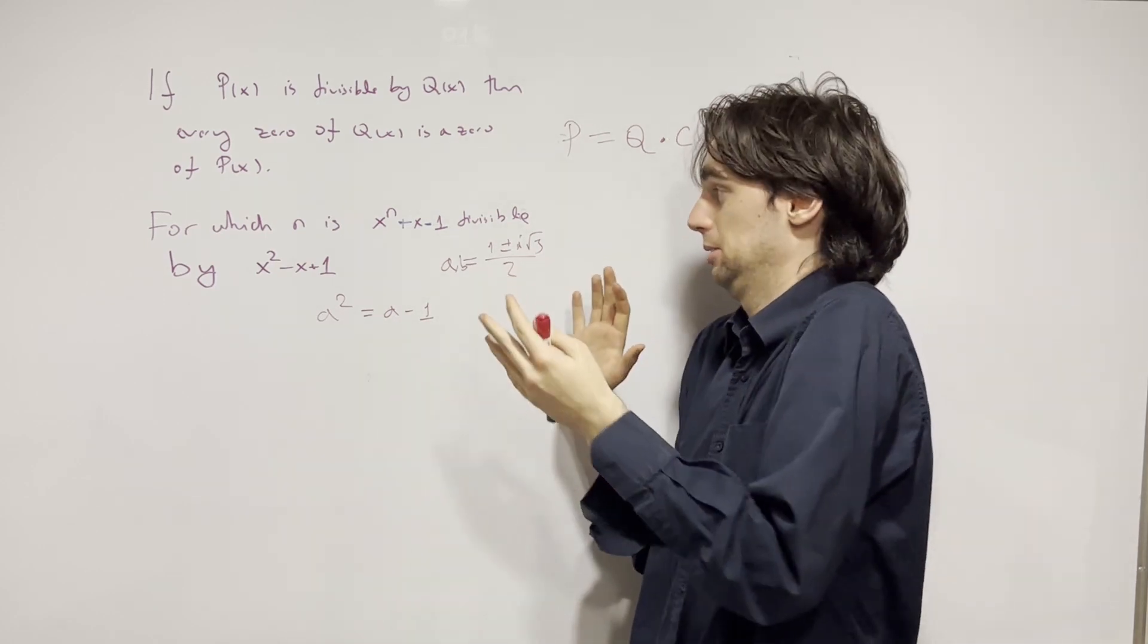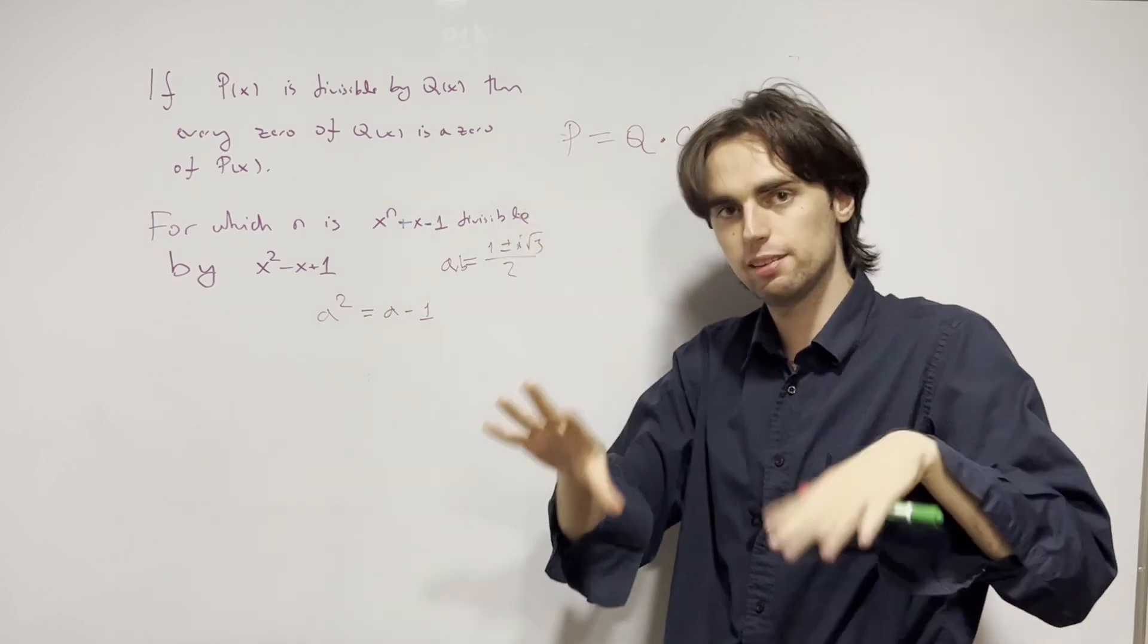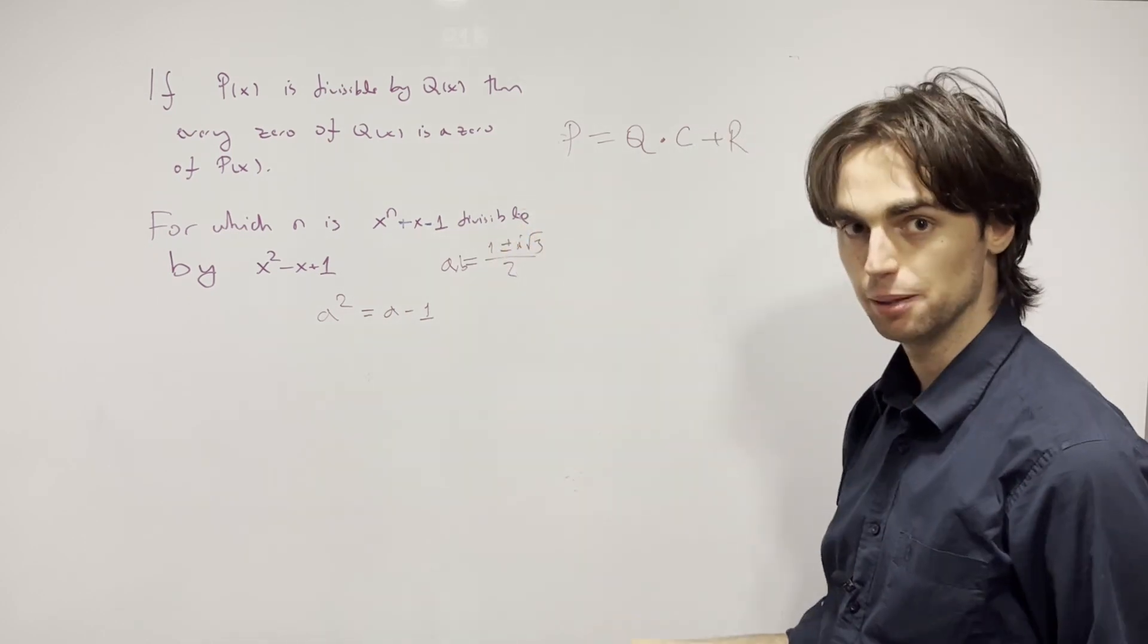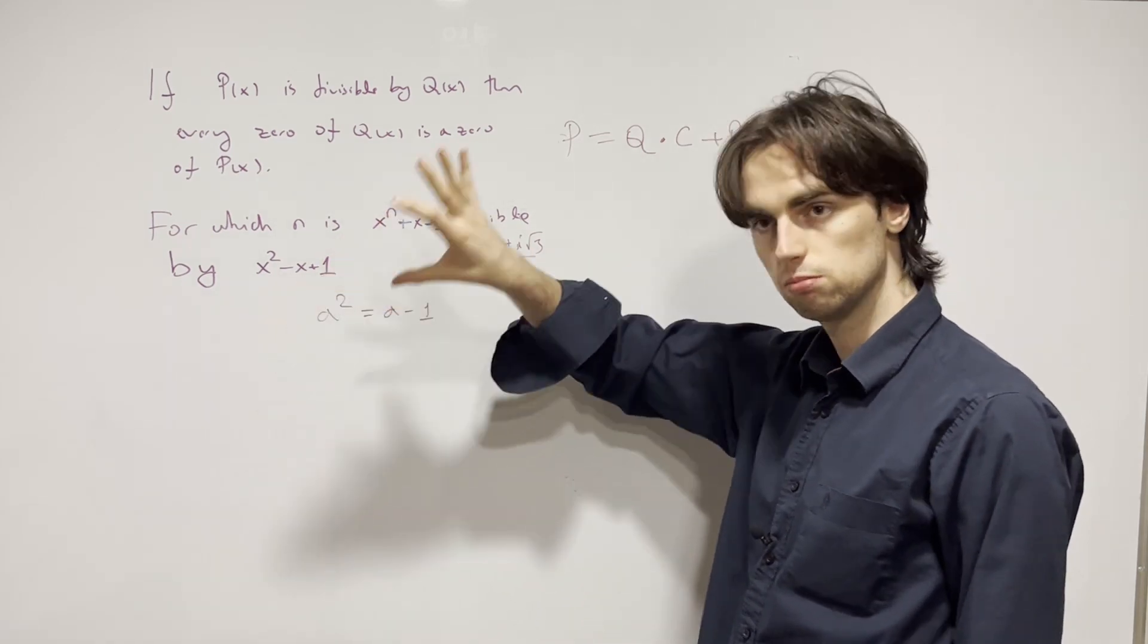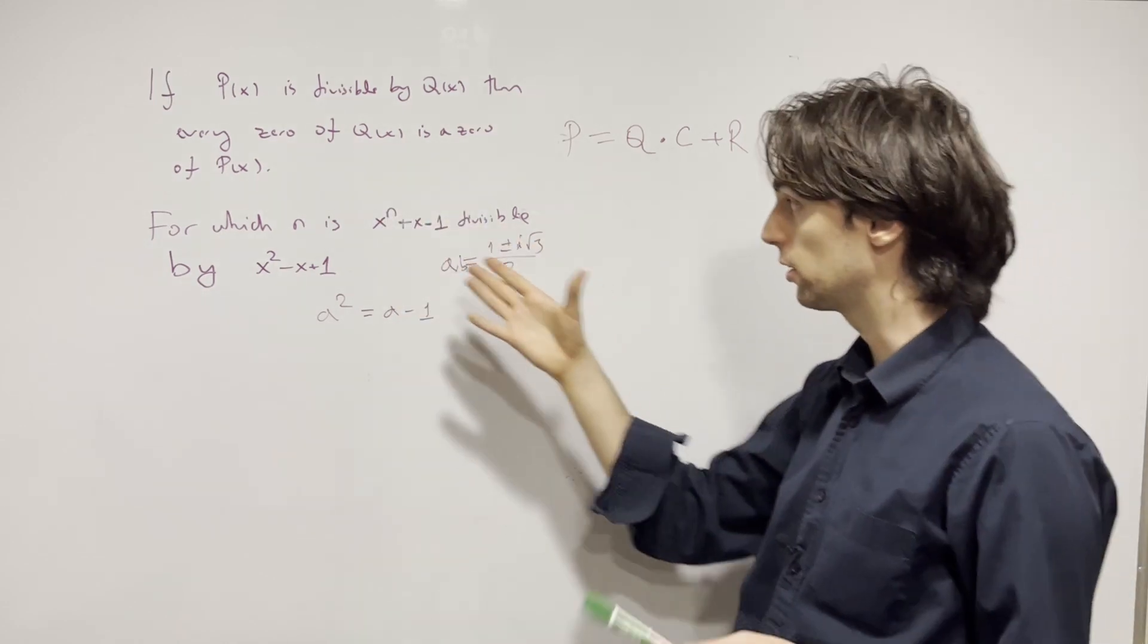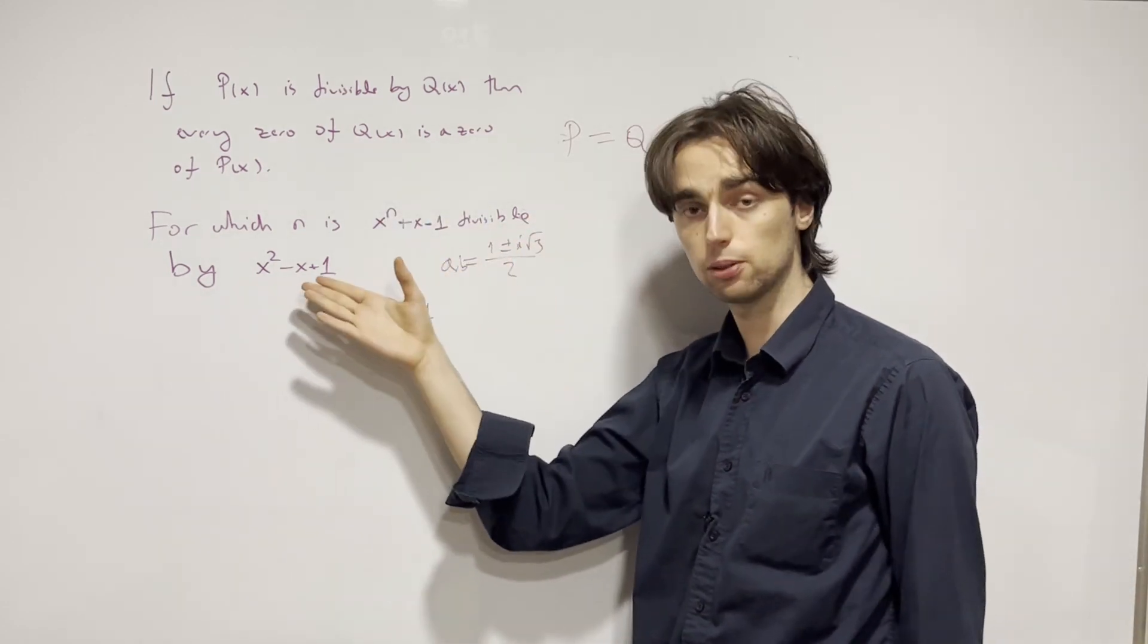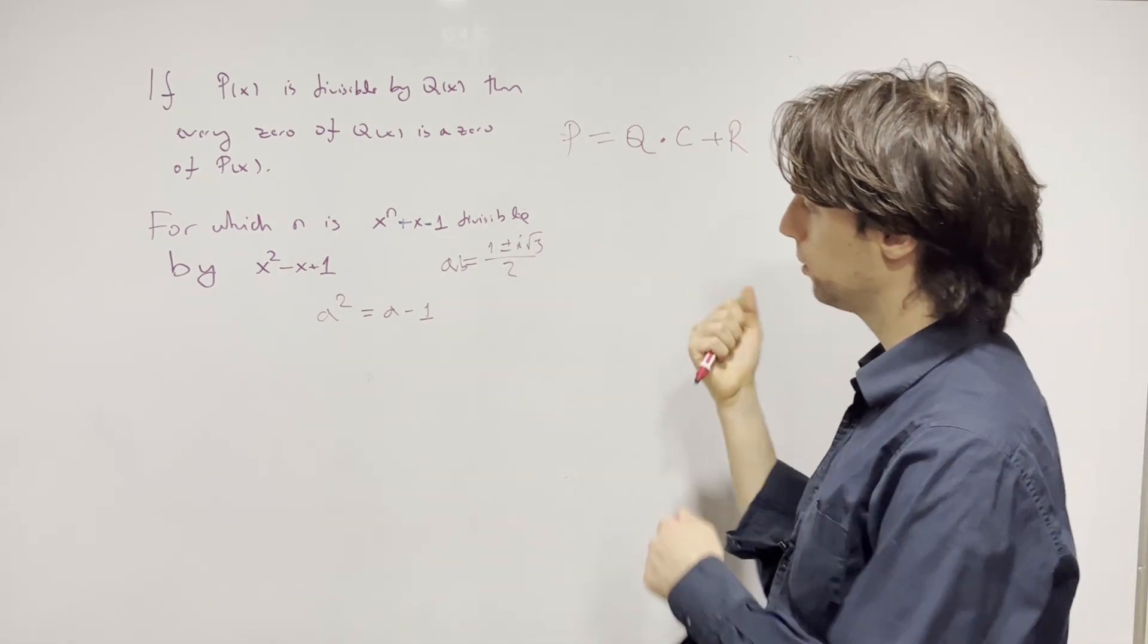But here's the thing: let's take it step by step. Just keep in mind, it matters that the zeros of this one are zeros of this one. That's what's necessary and sufficient for the divisibility.